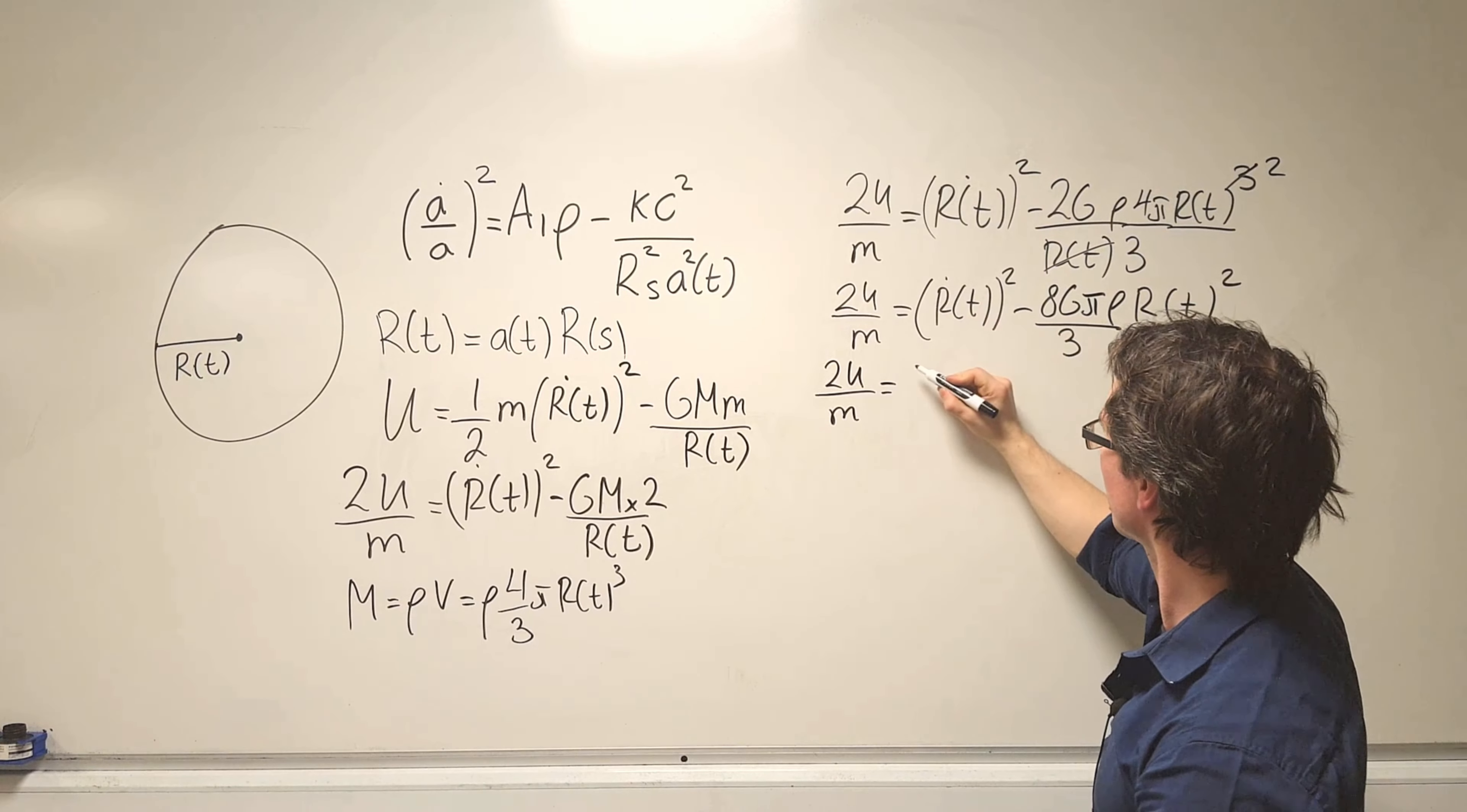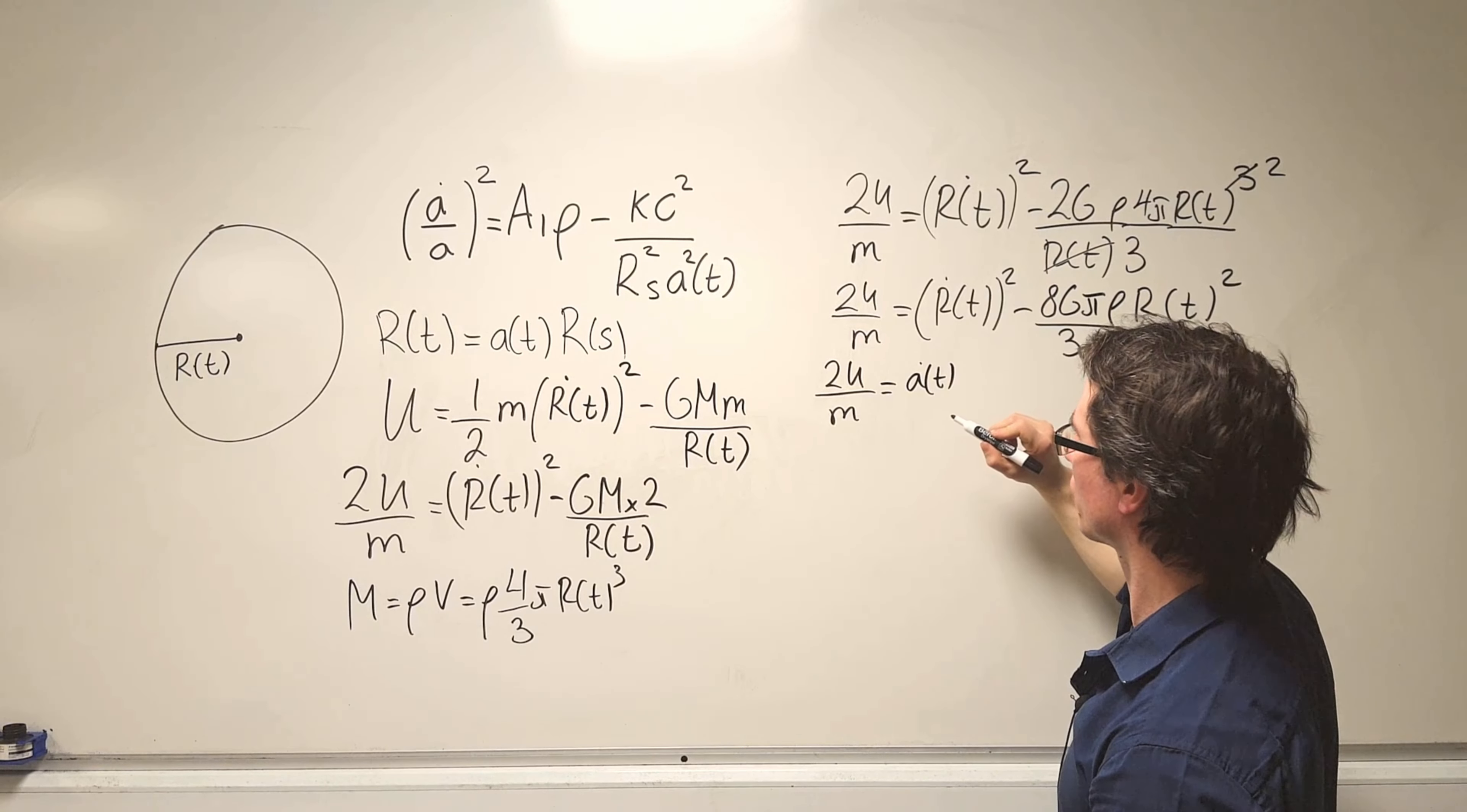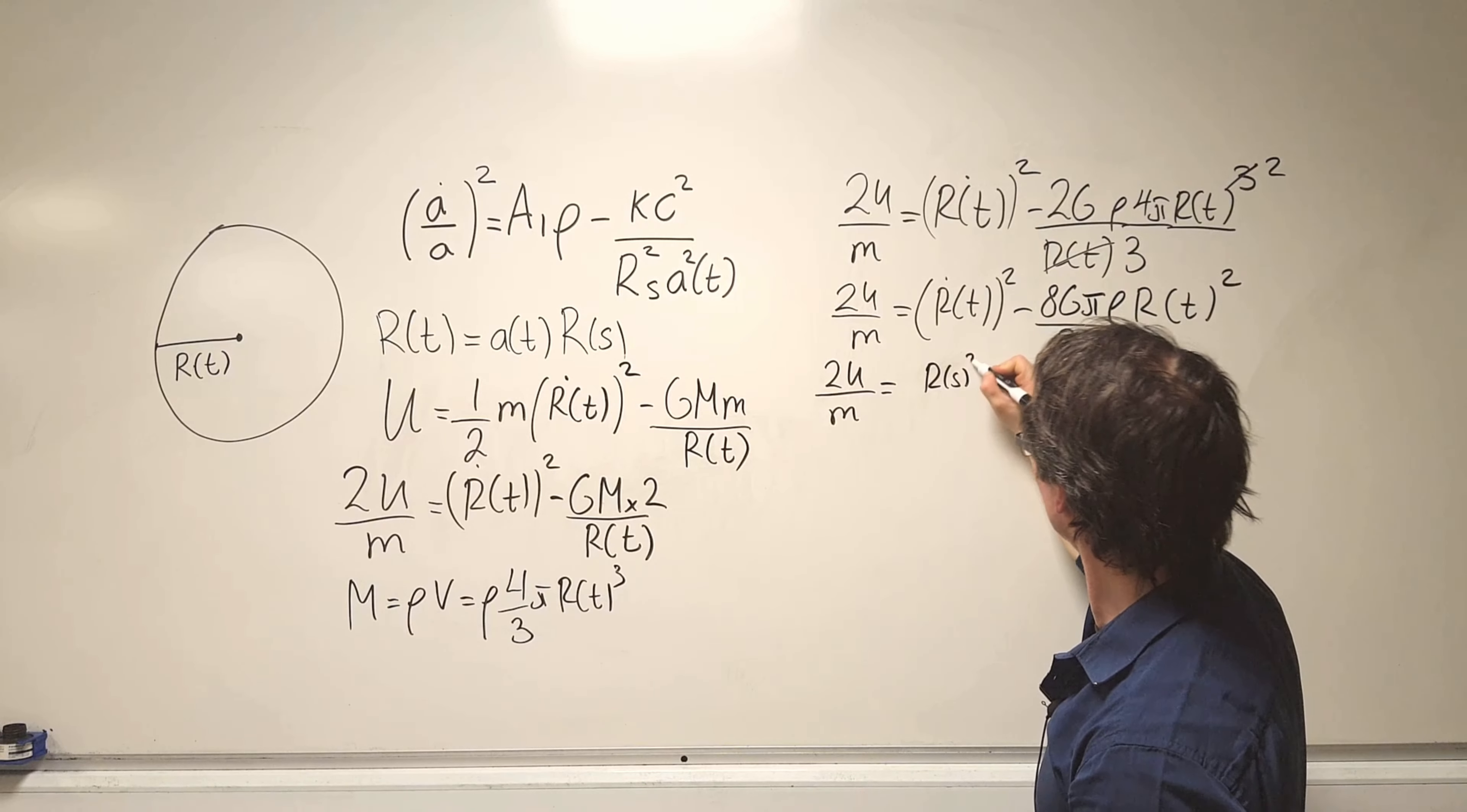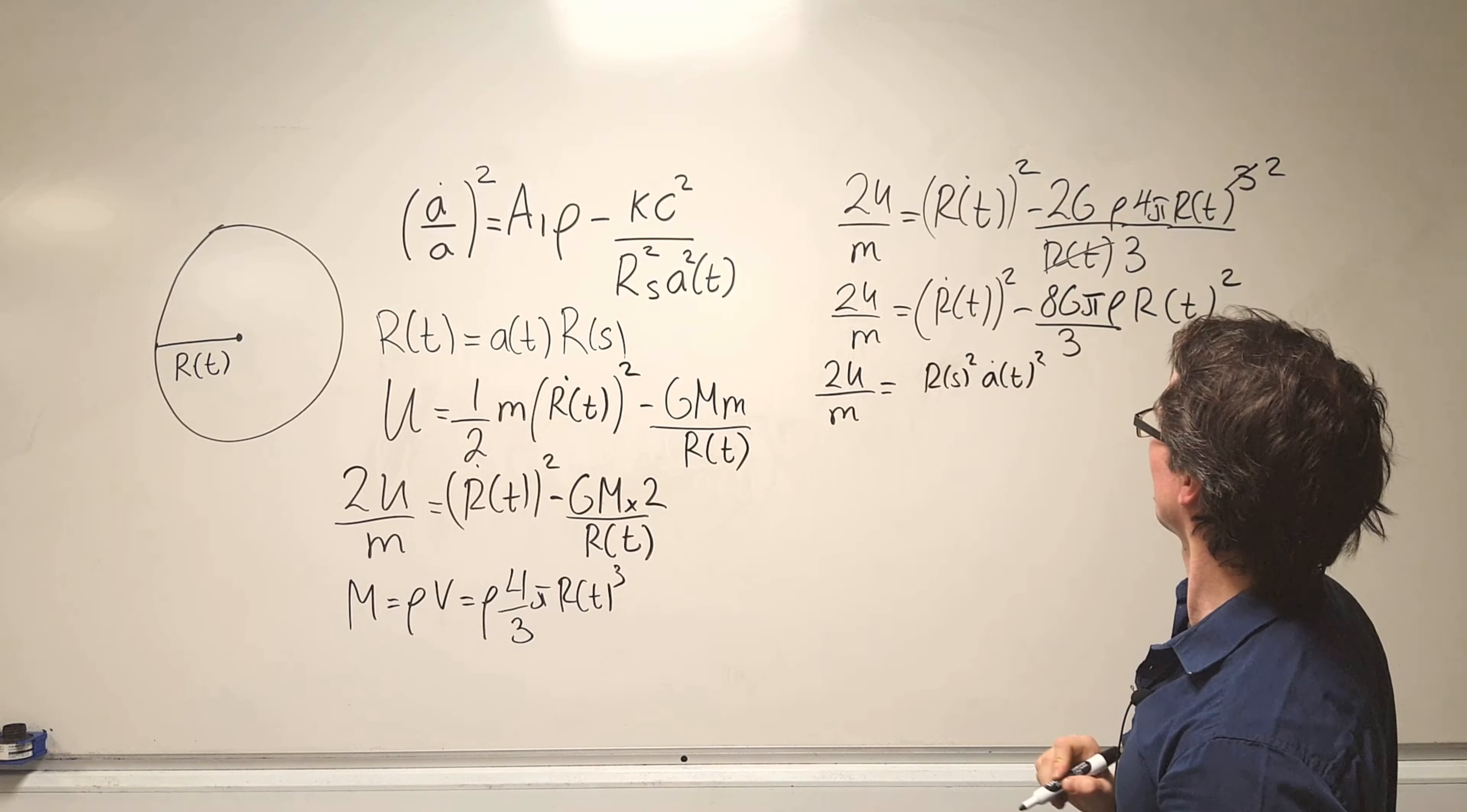What we're going to get then is that 2U over m will be R(t) squared, which is just going to be A as a function of t dot multiplied by R(s). Now R(s) does not really depend on time so I'm going to take that outside of the derivative, so I'm going to say R(s) squared times A as a function of t.